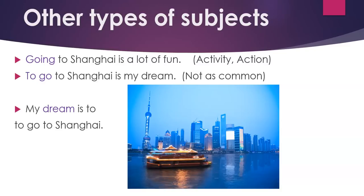What about other types of subjects? What if we want to talk about an activity? We change the verb into its -ing form. For example, 'Going to Shanghai is a lot of fun.' The subject here is going — it's an activity or an action. Sometimes we might say 'To go to Shanghai is my dream,' but that's not as common. It's more common to put a noun at the beginning — for example, 'My dream is to go to Shanghai.'